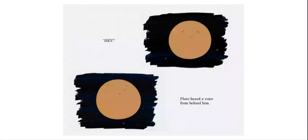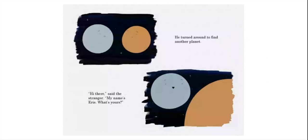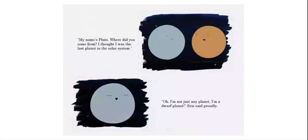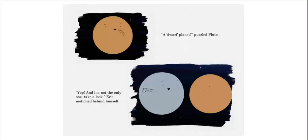Hey! Pluto heard a voice from behind him. He turned around to find another planet. Hi there, said the stranger. My name's Eris. What's yours? My name's Pluto. Where did you come from? I thought I was the last planet in the solar system. Oh, I'm not just any planet. I'm a dwarf planet, Eris said proudly. A dwarf planet, puzzled Pluto. Yep, and I'm not the only one. Take a look, Eris motioned behind himself.